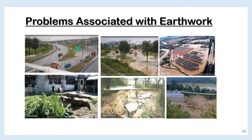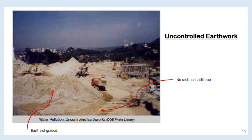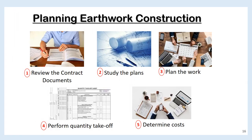If not managed well, earthworks have the potential to cause significant adverse effects on the environment. The picture shows some problems associated with earthwork. To control earthwork during construction, you need to centralize all facilities at one place, then build silt traps and slope turf to protect the environment. The next picture shows uncontrolled earthwork activity — the earth not graded and no silt trap built for temporary sediment control — which can cause pollution and affect the environment.